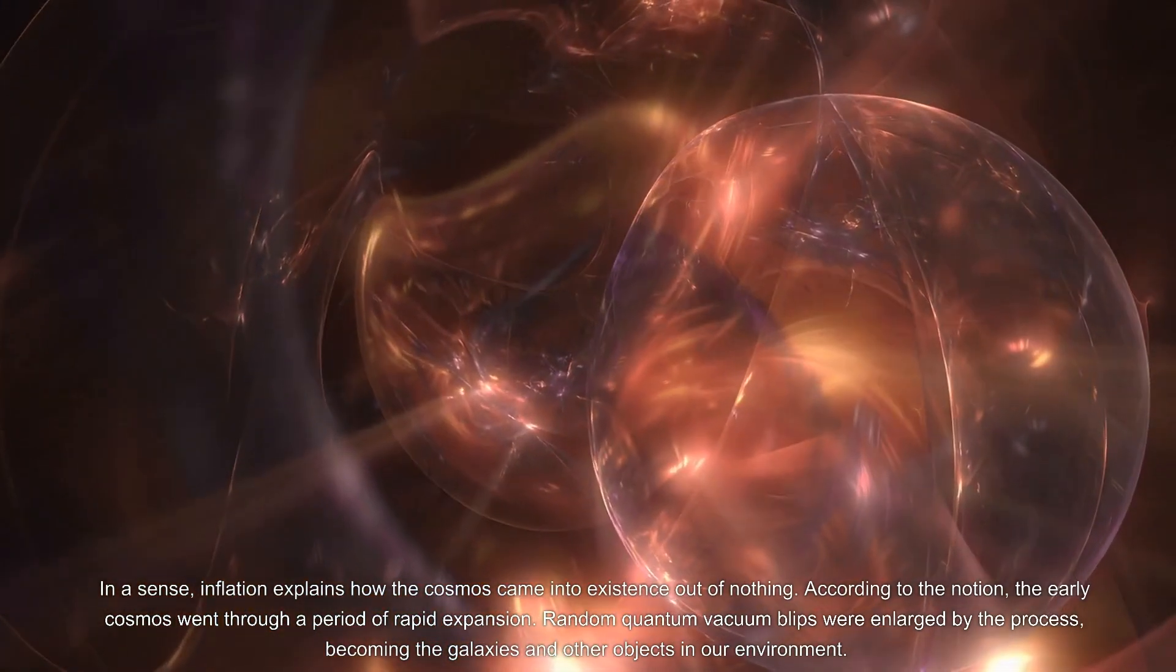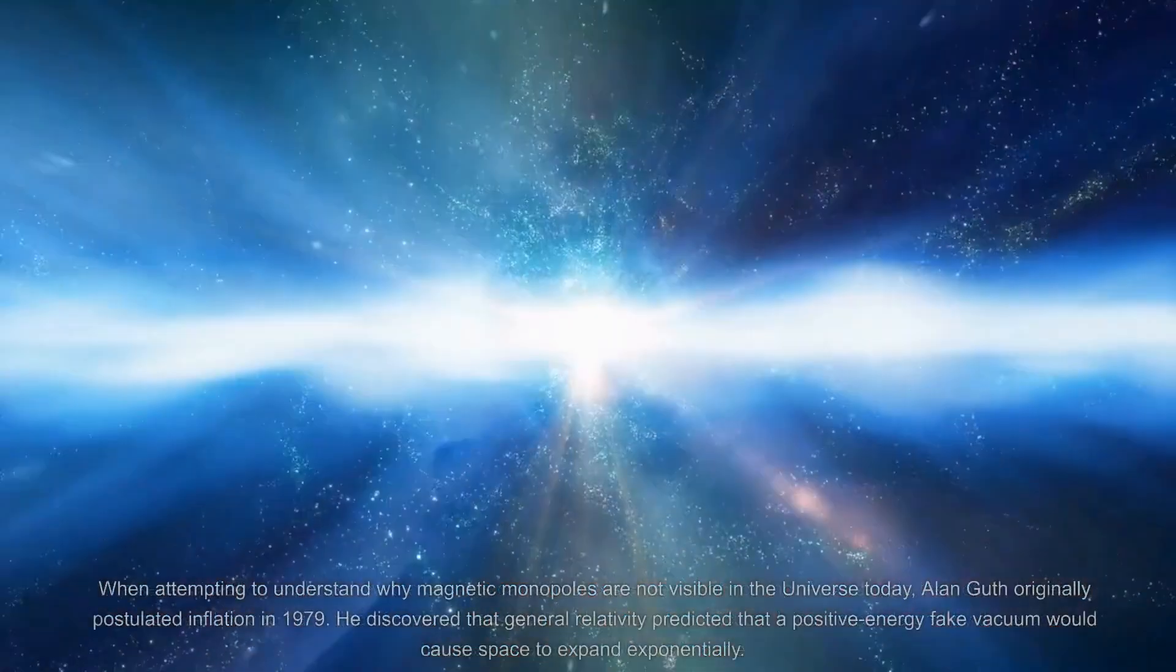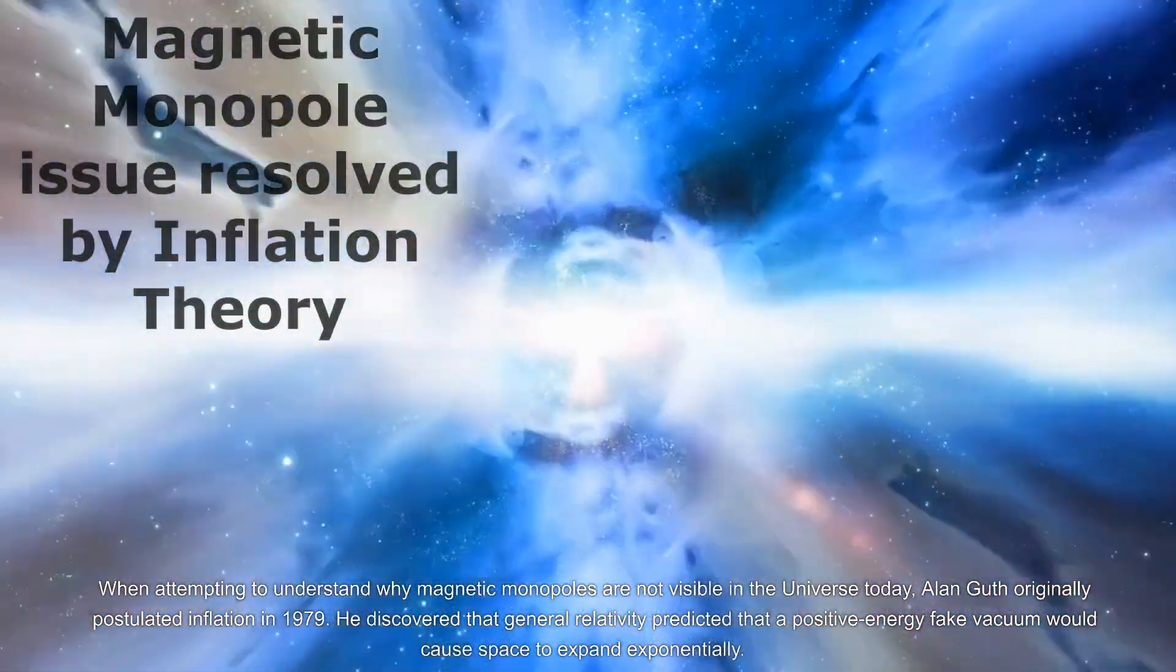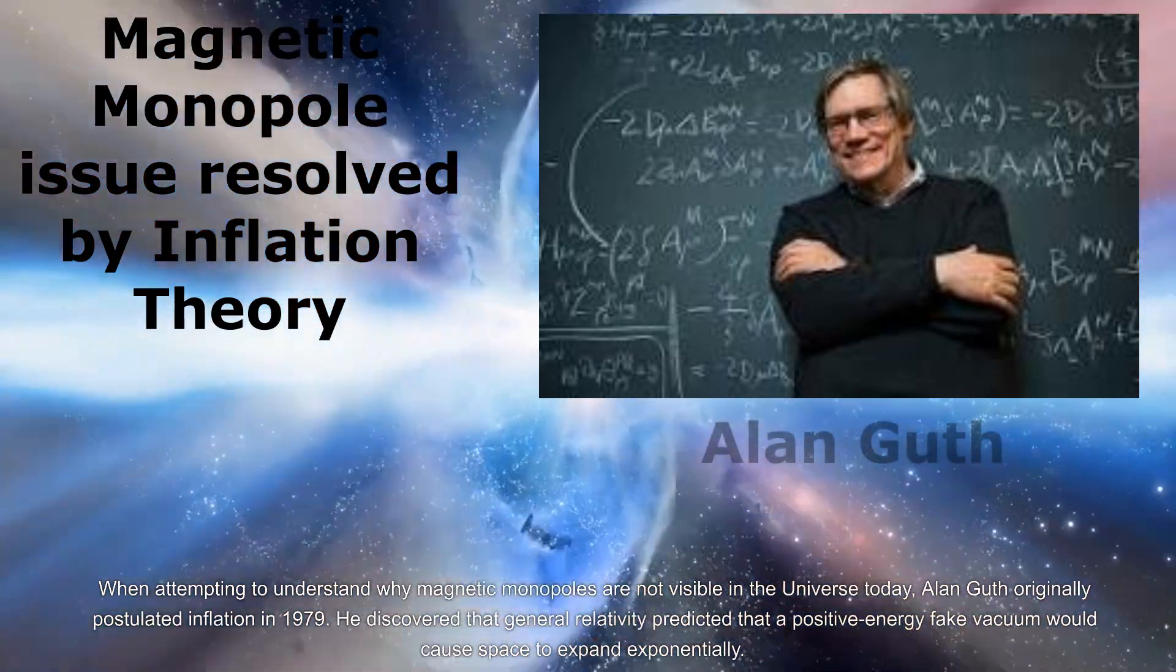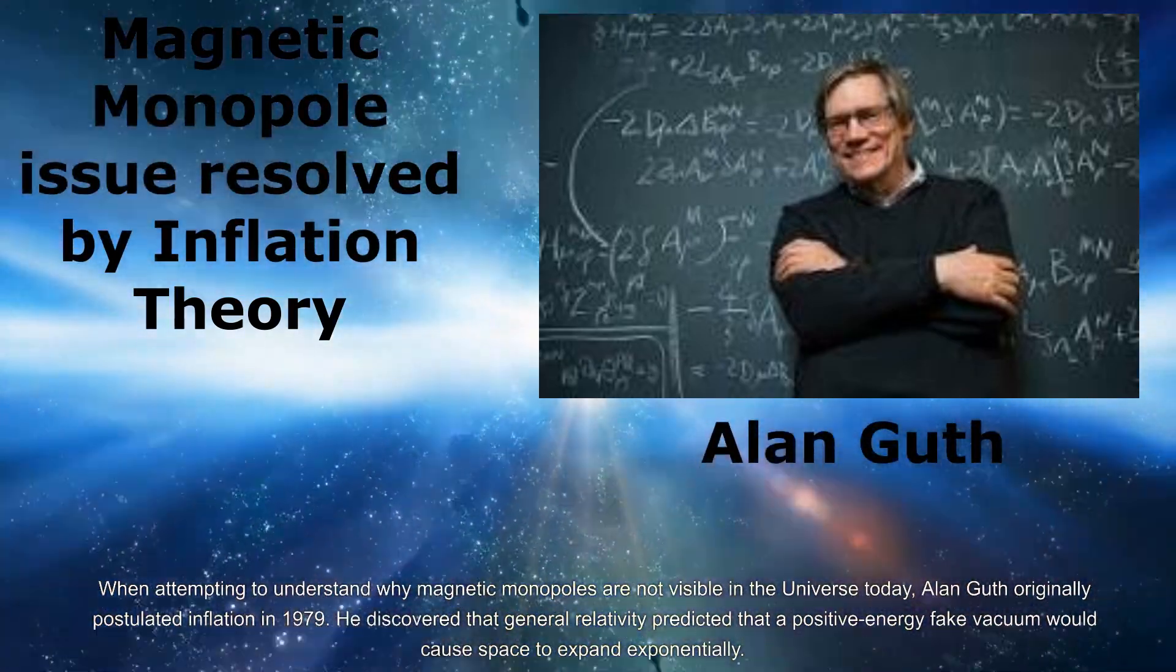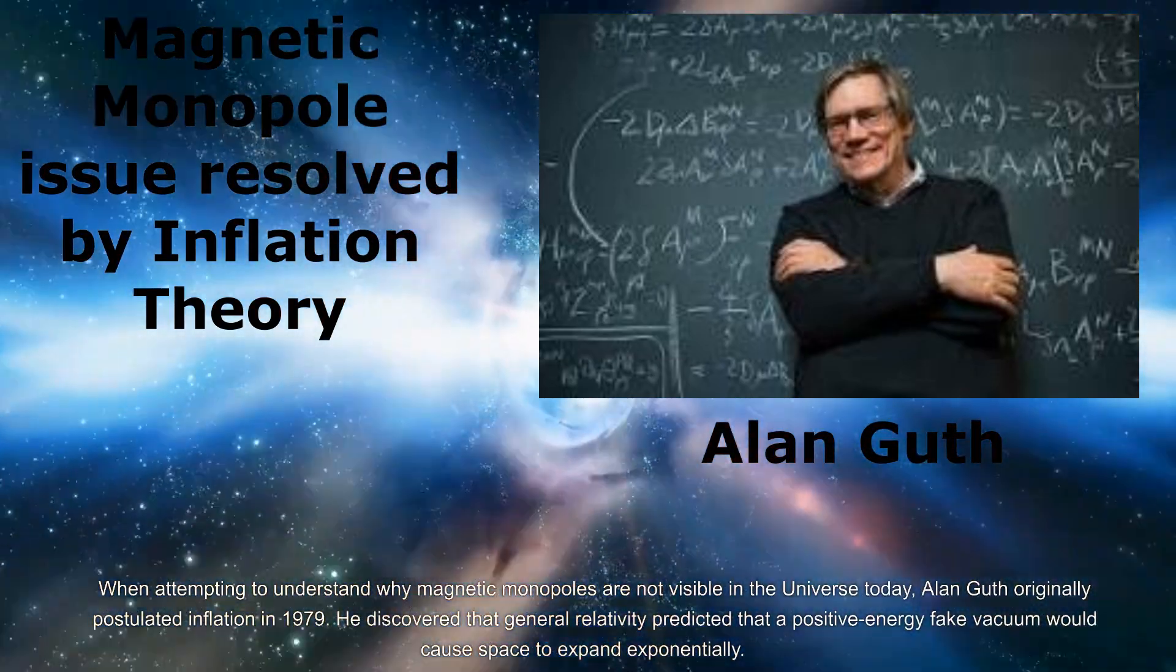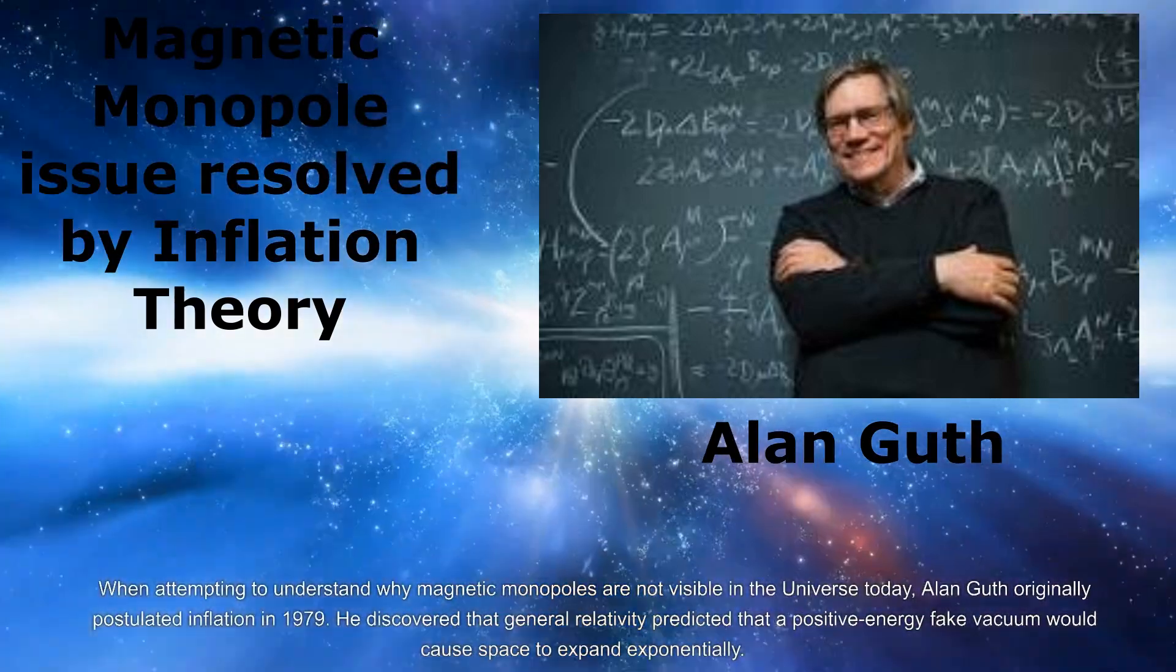When attempting to understand why magnetic monopoles are not visible in the universe today, Alan Guth originally postulated inflation in 1979. He discovered that general relativity predicted that a positive energy fake vacuum would cause space to expand exponentially.